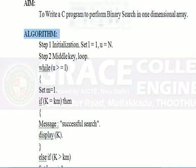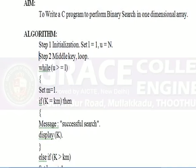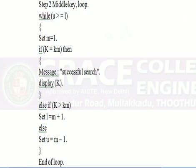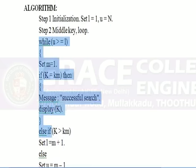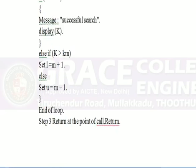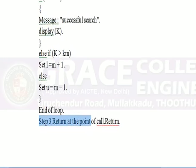Algorithm. Step 1: Initialize the values. Step 2: Here we are using looping. If the element is searched, then there will be a successful search. Else, it will be an unsuccessful search. Finally, return the output.